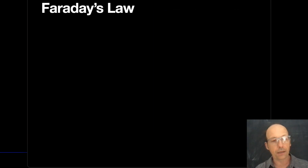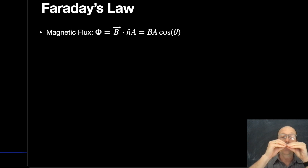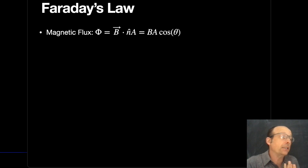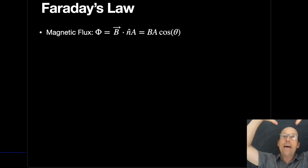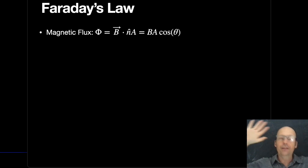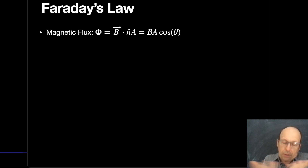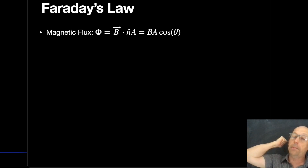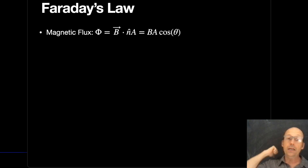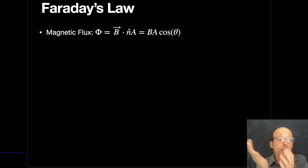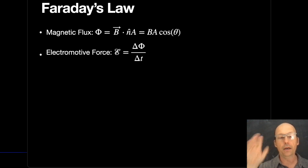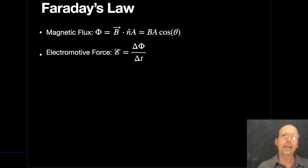We do need to talk about that. Faraday's Law says there is a magnetic flux. The magnetic flux is roughly how much magnetic field passes through an area. It depends on the strength of the magnetic field, the size of the area, and the angle between the area and the field. Then we have this idea of electromotive force — basically a voltage.